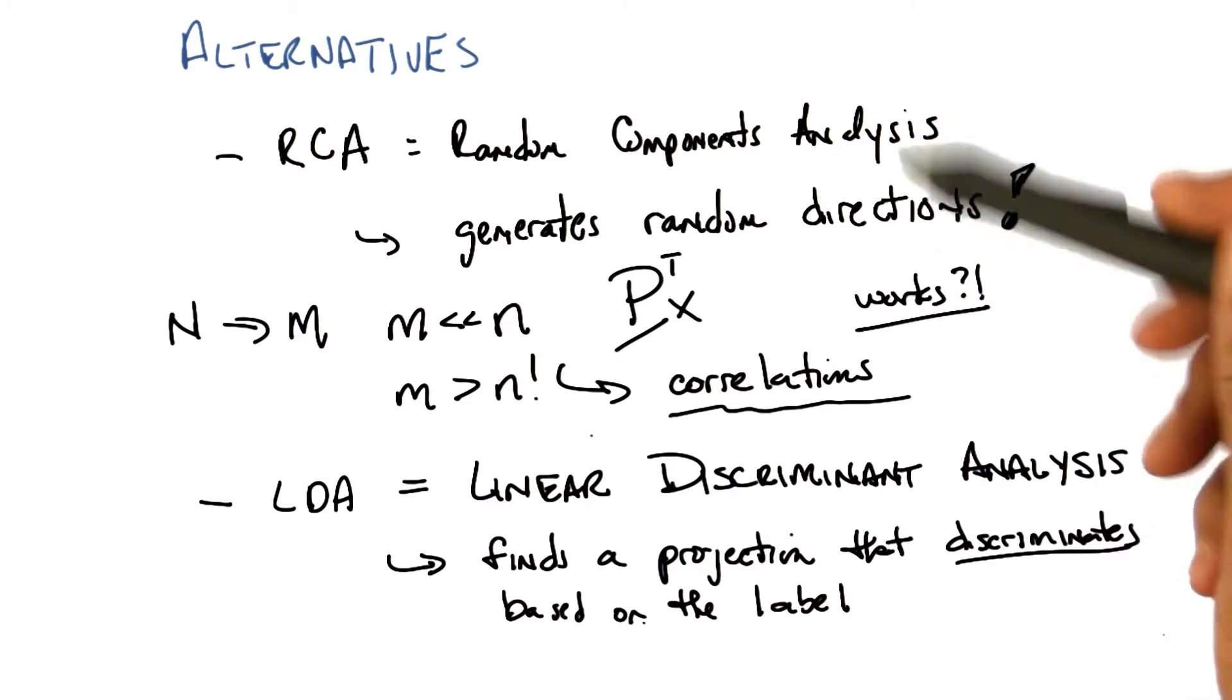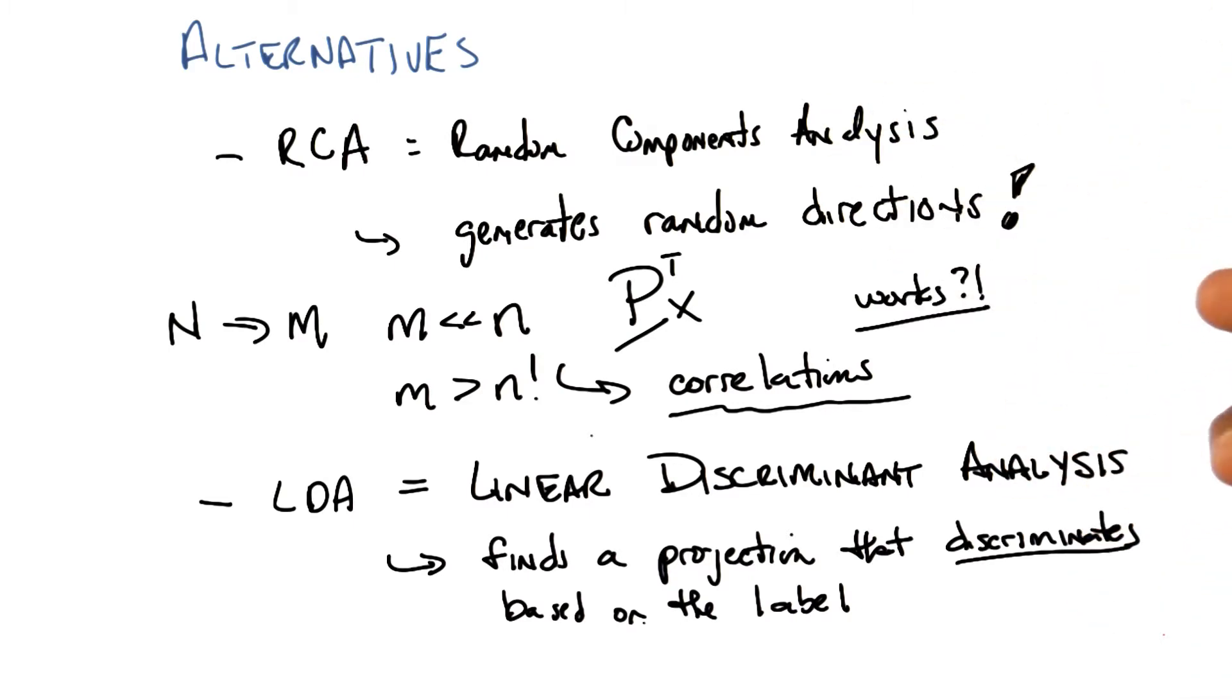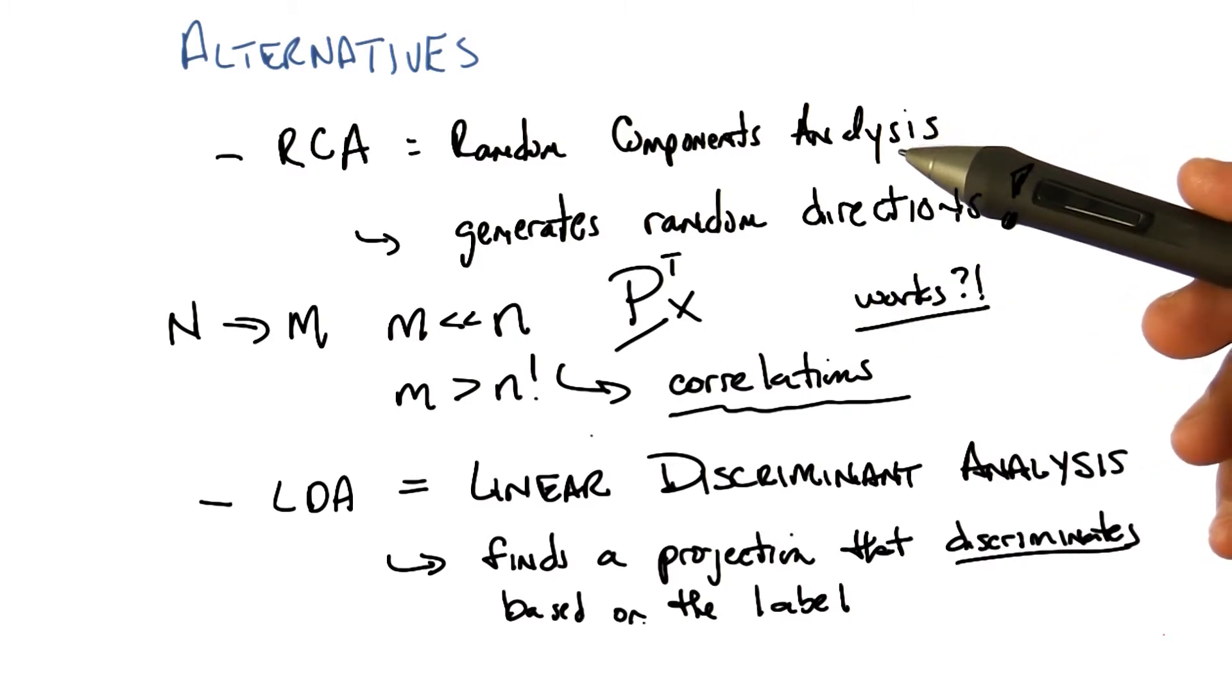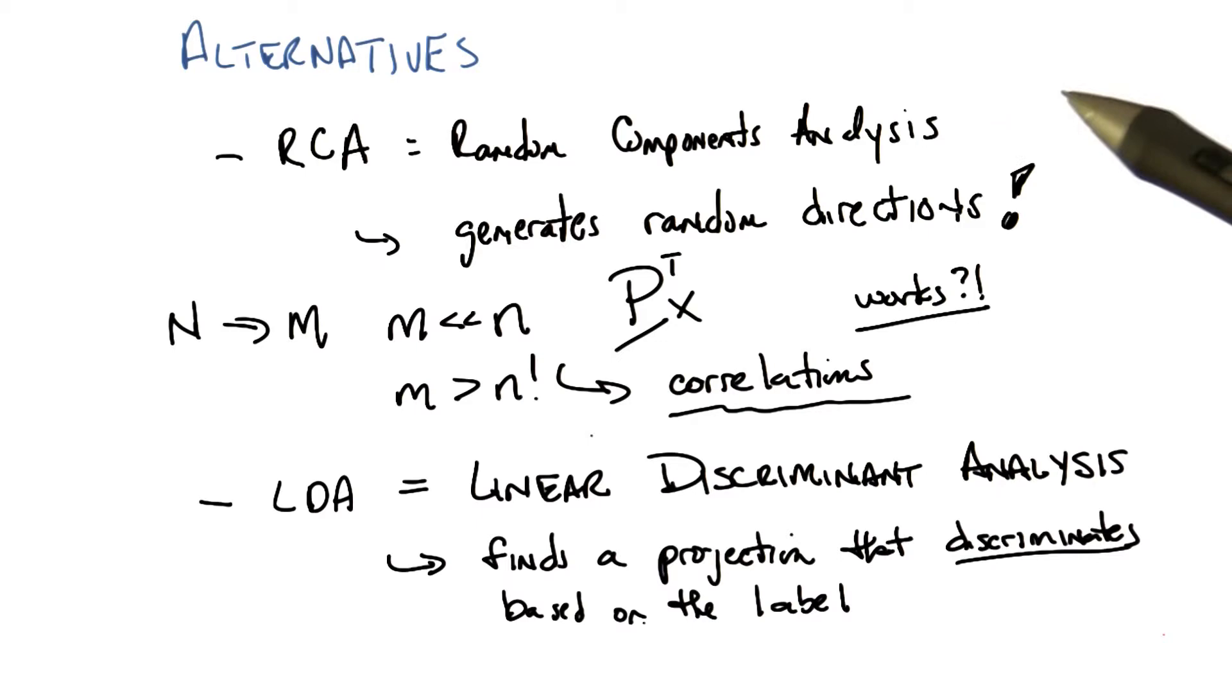That's exactly right. All three of the examples we gave before feel almost like filter methods, right? In that they have some criterion they're trying to maximize, even though randomized projections is, who knows what it's trying to maximize besides randomness. But they don't care about the ultimate learner or the ultimate label that's associated with them.